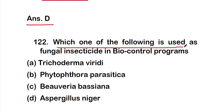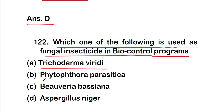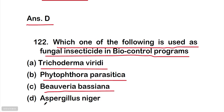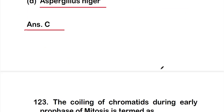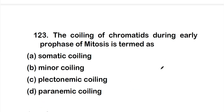Question 122: Which one of the following is used as a fungal insecticide in a biocontrol program? Option A is Trichoderma viride, option B is Phytophthora parasitica, option C is Beauveria bassiana, or option D is Aspergillus niger. The right answer is option C, Beauveria bassiana, which is used as a fungal insecticide in biocontrol programs.